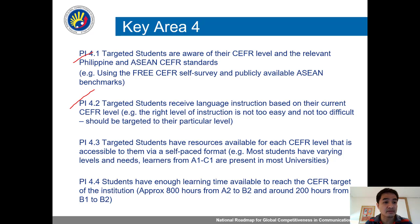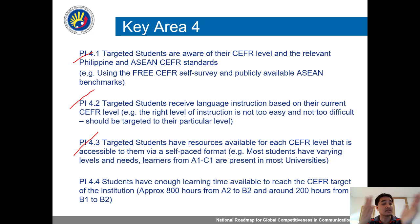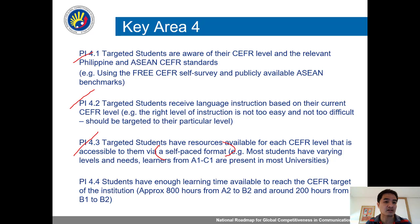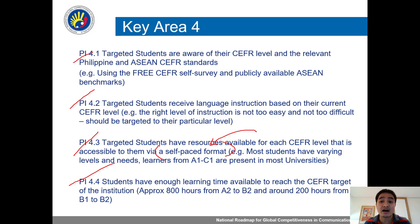4.3 is that resources are available — students know where to go. If I'm an A1 learner, I know where the Duolingo app is. If I'm a B1 learner, I'll go to this YouTube site or open educational resources, so they know where to find material at different levels. Due to time and cost constraints, we want to check the self-paced format. And 4.4 is that students have enough learning time available — maybe about 200 hours from A2 to B2. Sounds like a lot, but it's doable: summer breaks, Christmas breaks, lunch breaks — it is doable.